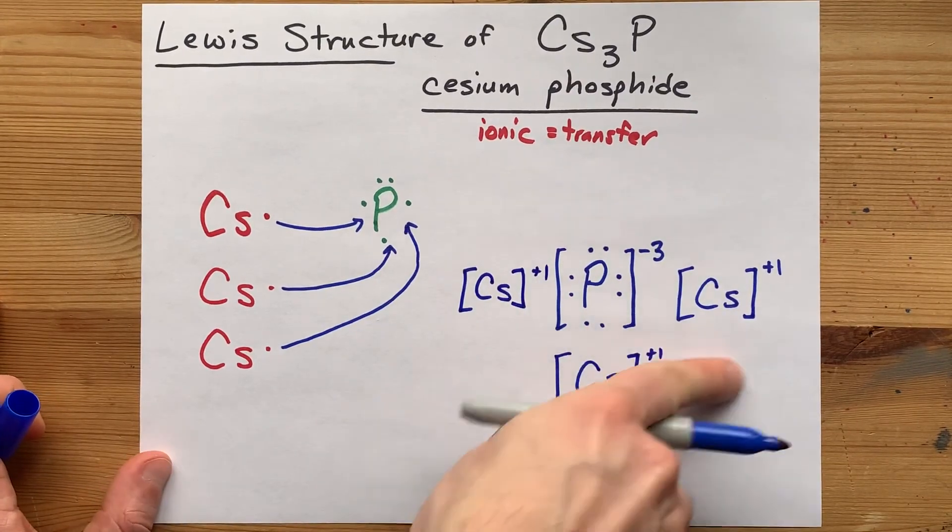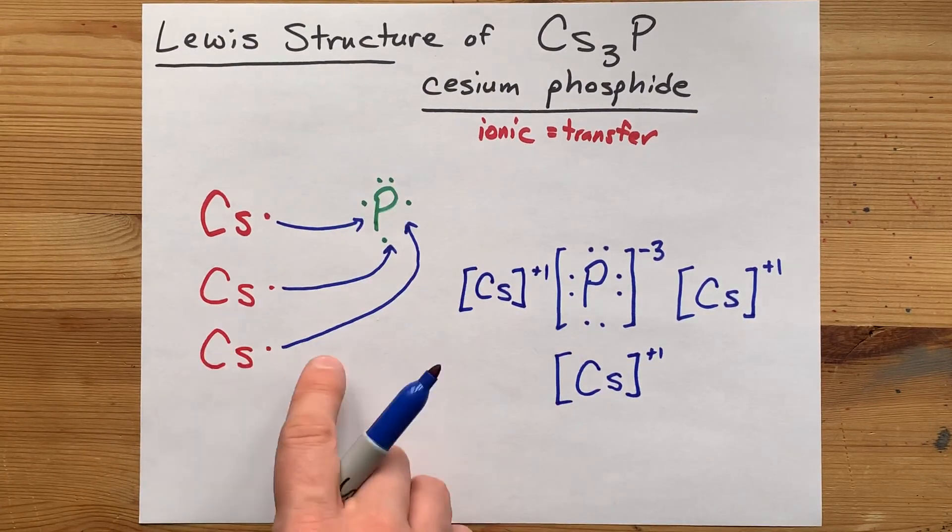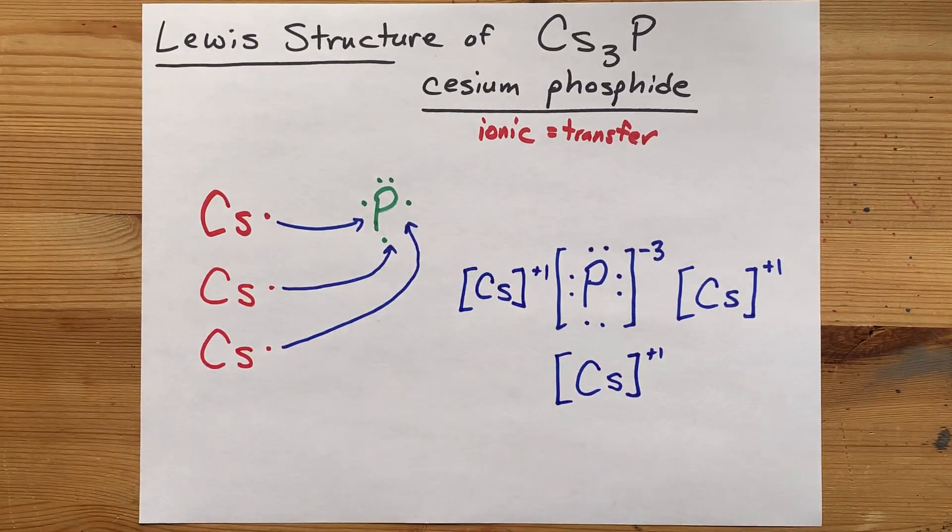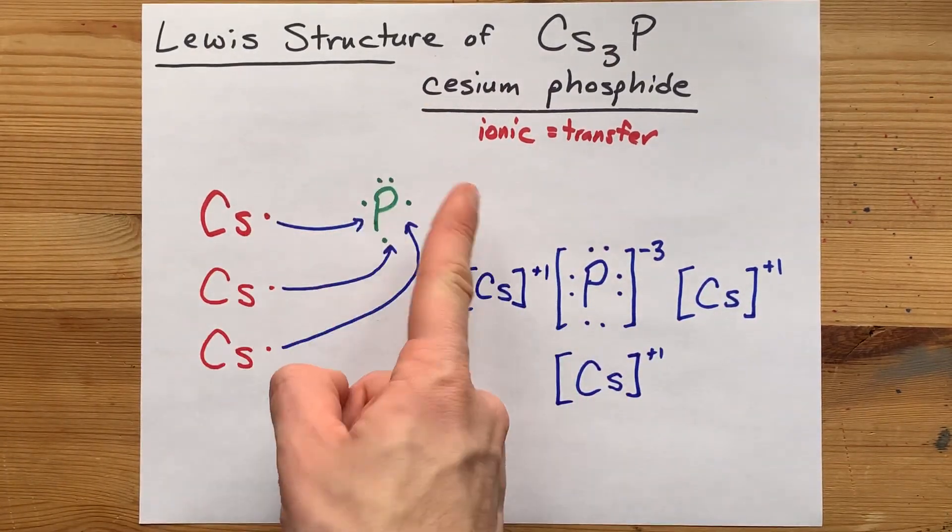There we go. This here in blue is the completed Lewis structure for cesium phosphide. This is us showing the transfer as it happens. Absolutely beautiful, just like you are. Best of luck.